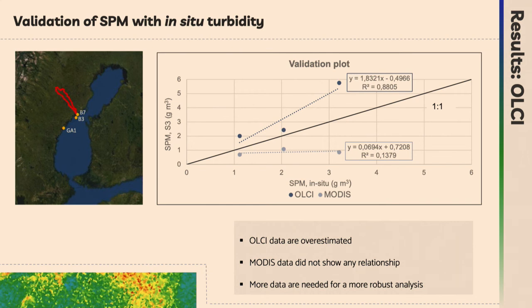I also did a quick validation to make sure my data were correct. I compared with in-situ turbidity data from three different stations around the Baltic Sea — two really close to the estuary and one further south. The OLCI data gave me an overestimation, which is understandable as many papers have found this before, while MODIS data, being monthly averages, did not show any relationship and probably didn't reflect the specific days well. I had very little in-situ data to make a truly valid validation.